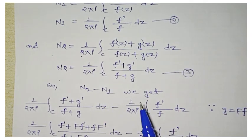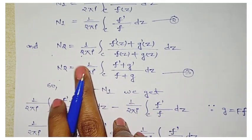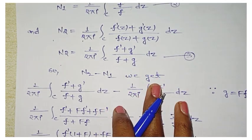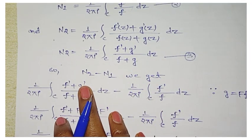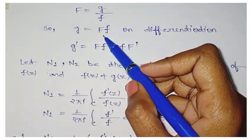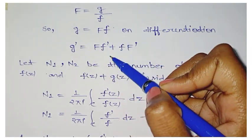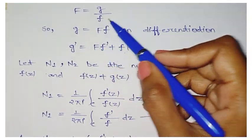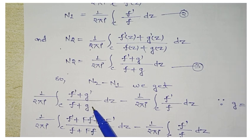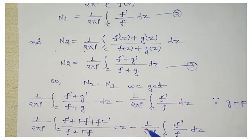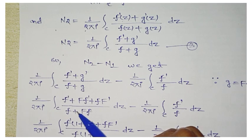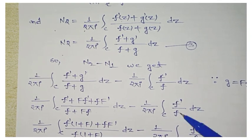Subtracting equation two from equation three: n2 - n1 = (1/2πi) ∮ [derivative of (f+g)/(f+g)] dz − (1/2πi) ∮ f'/f dz. Now we substitute the value of g', which we found as g' = F'f + Ff'. Putting this in, where g' appears we write F'f + Ff', and F and f are substituted as defined. Taking f' and f as common factors where applicable.